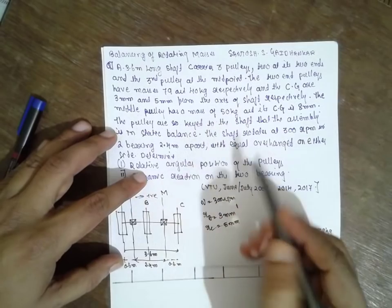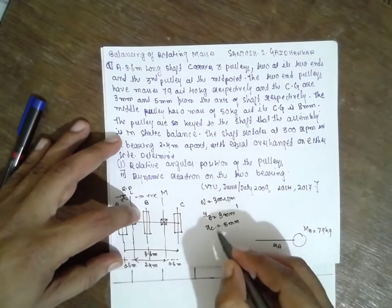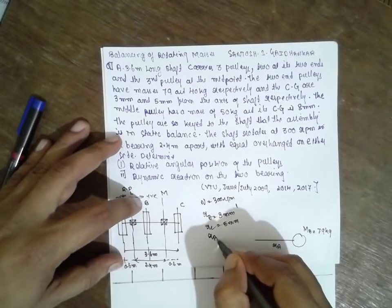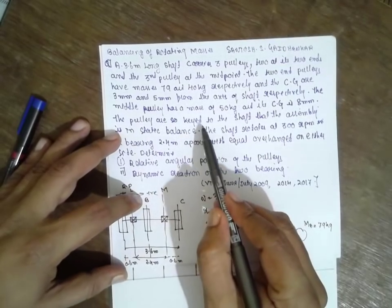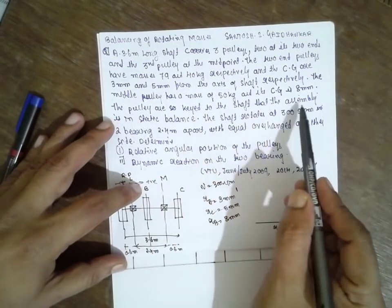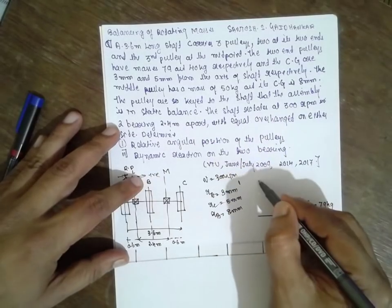The mid pulley has mass 50 kg. Its radius RB is 8 mm. We have to convert it in terms of meters. The pulleys are keyed to the shaft so that the assembly is in static balance. The shaft rotates at 300 rpm. Omega is given as 300 rpm.